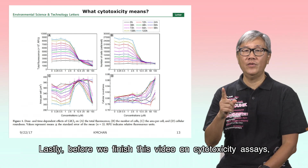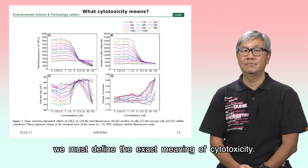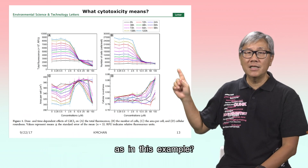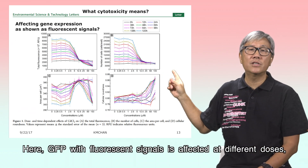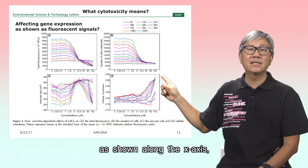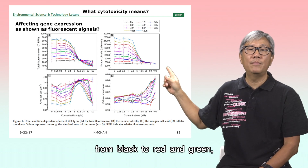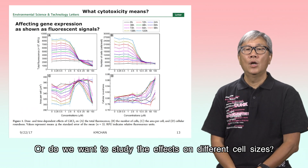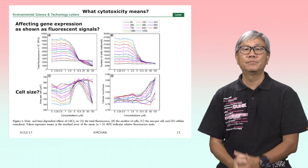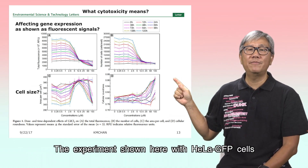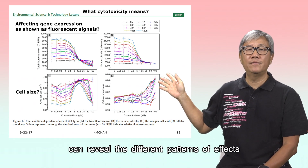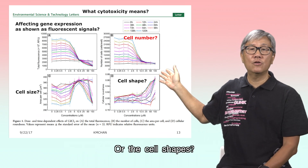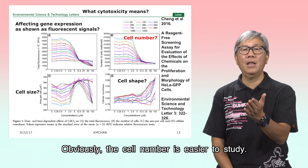Lastly, before we finish this video on cytotoxicity assays, we must define the exact meaning of cytotoxicity. Do we want to test the effect on gene expression? As in this example, GFP fluorescence signals are affected at different doses — shown along the x-axis — and at different time points with different colors from black to red and green — shown along the y-axis. Or, do we want to study the effects on different cell sizes? The experiment shown here with HeLa-GFP cells can reveal different patterns of effects on different cell sizes. Or, do we want to test the cell numbers, or the cell shapes? Obviously, the cell number is easier to study.